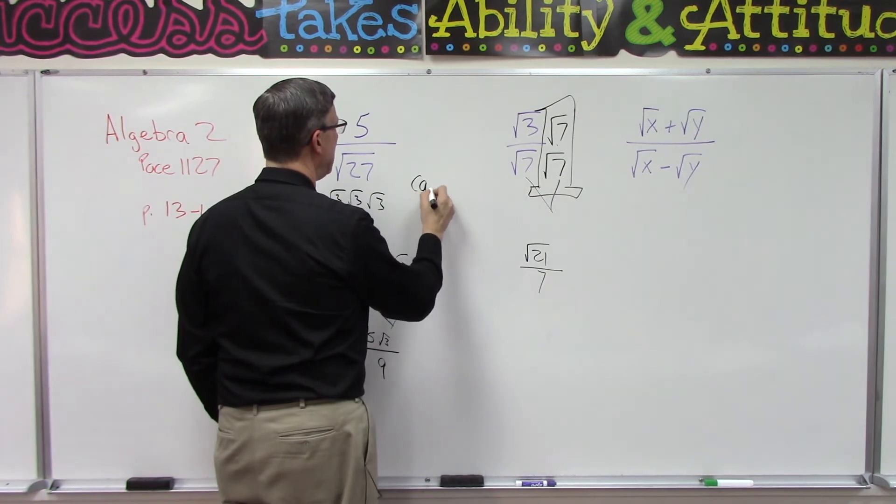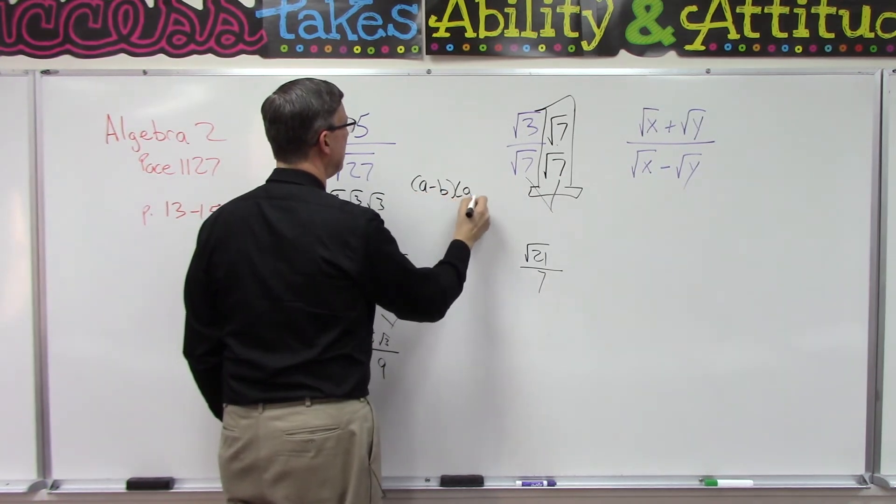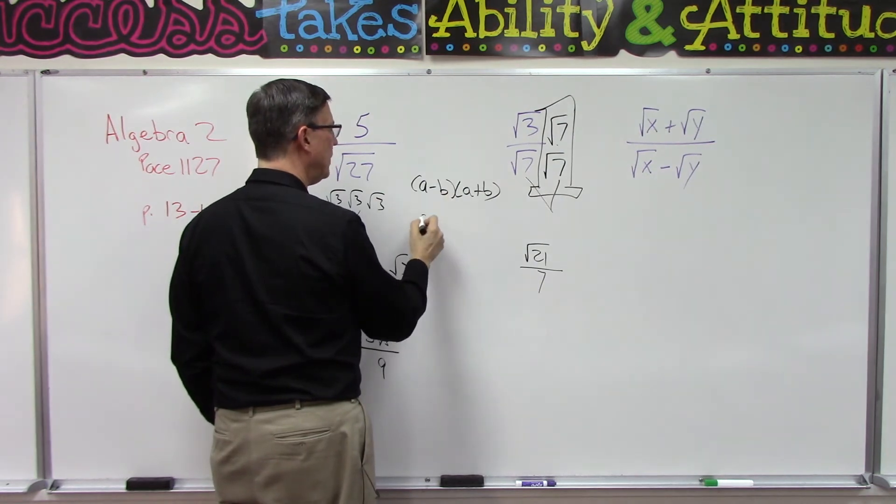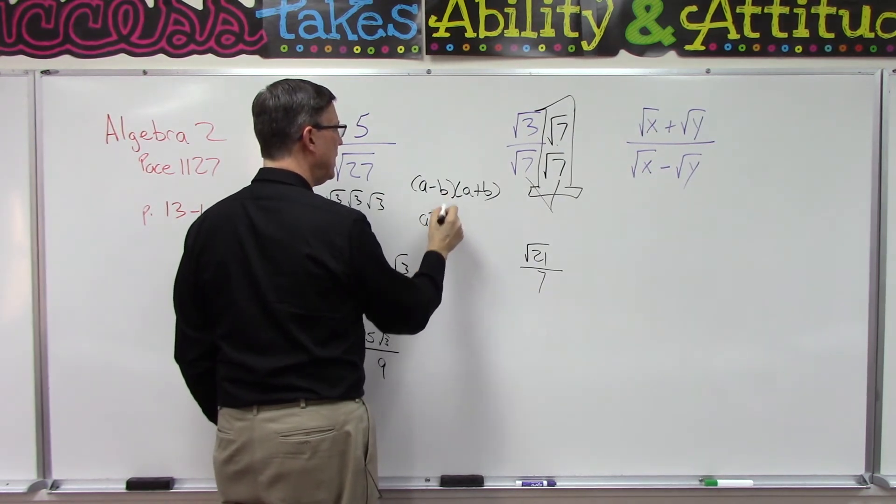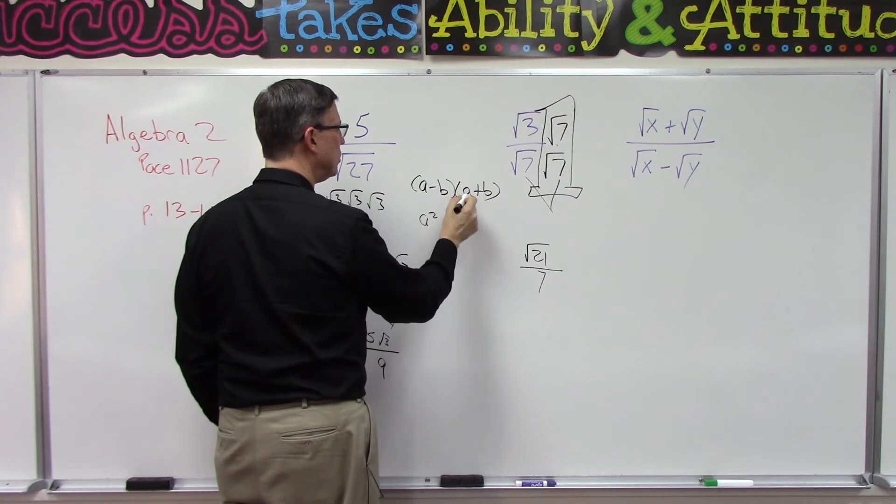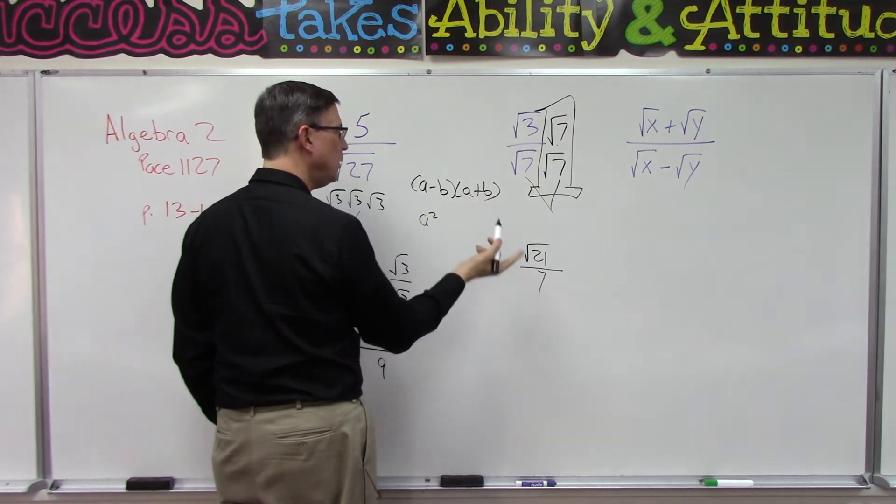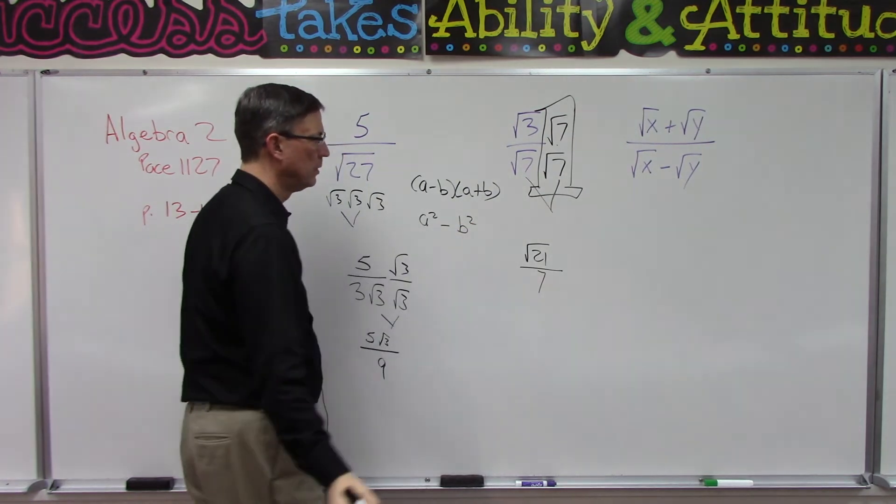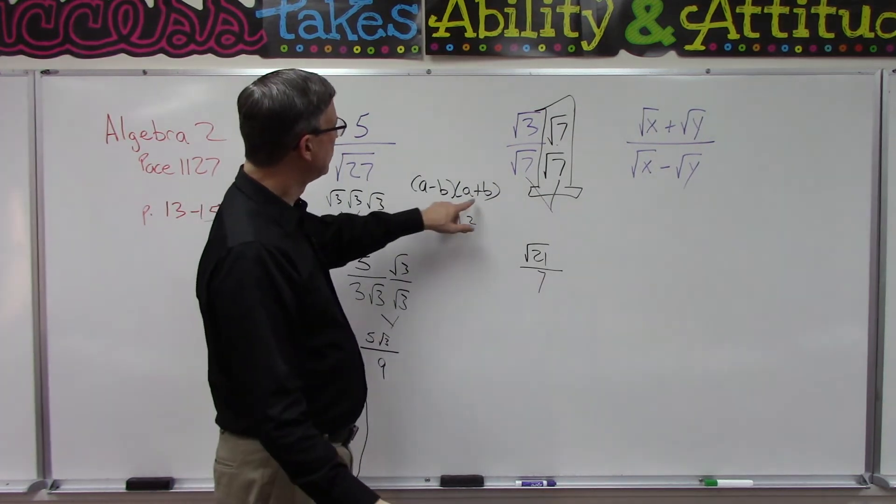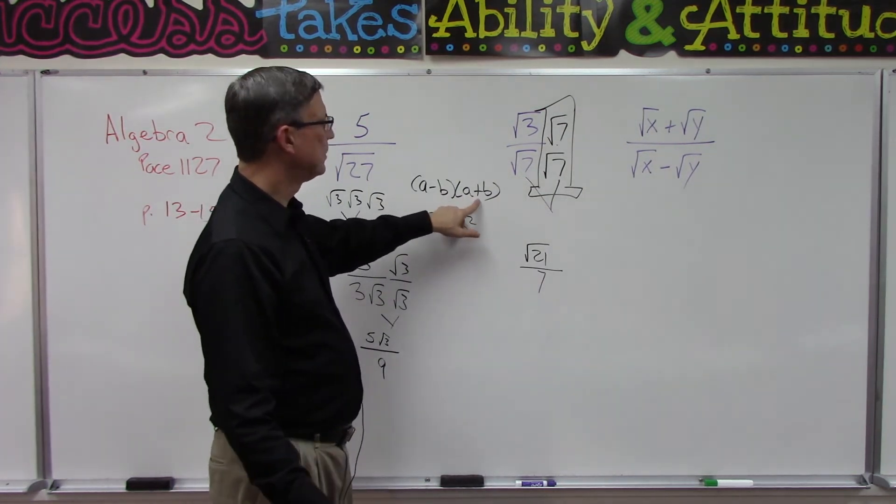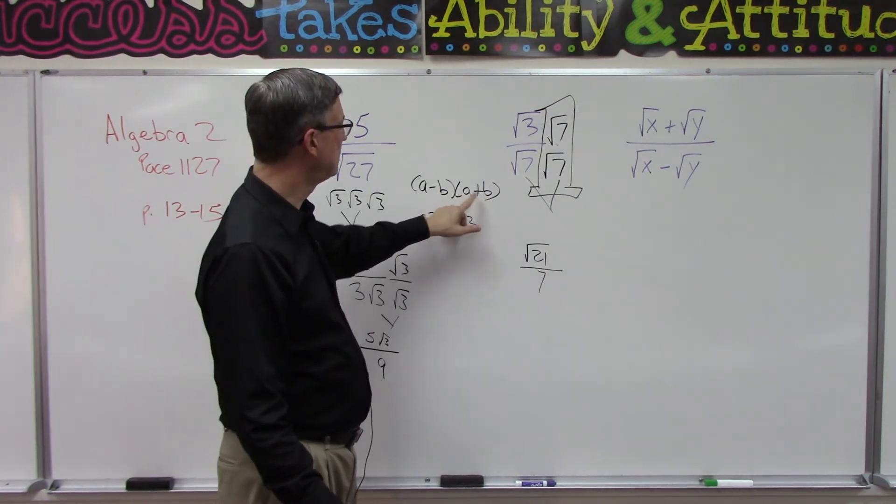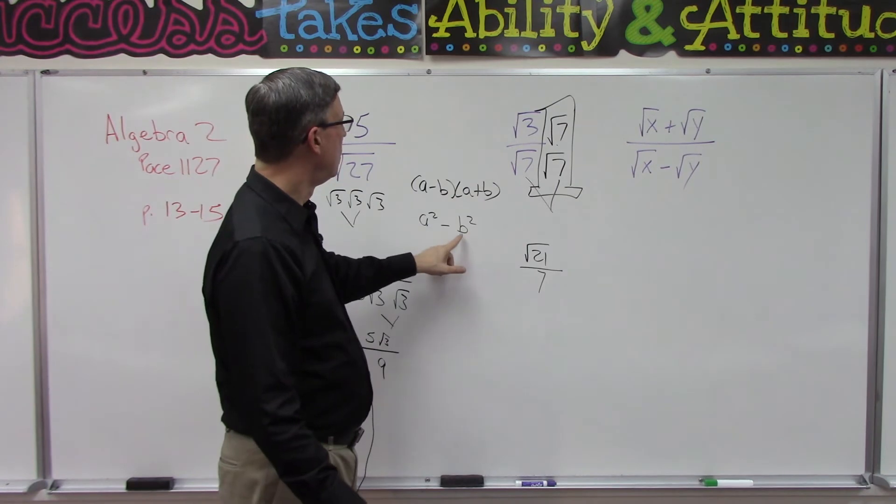a minus b times a plus b. You remember that when you do the FOIL method, you get a squared, and then the middle term is negative ab and positive ab, which cancels out, and then you're left with b squared. So by multiplying by the—we technically call it the conjugate—so if this is minus, we multiply by the plus but leave these two terms the same. We can